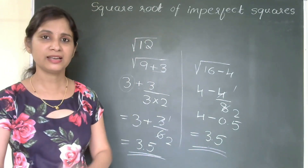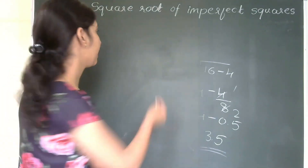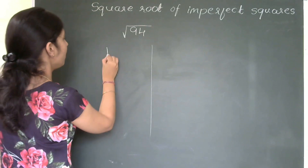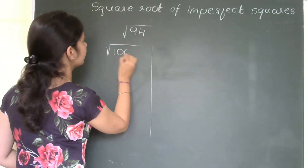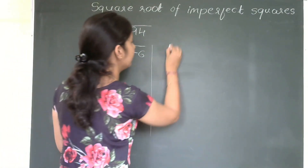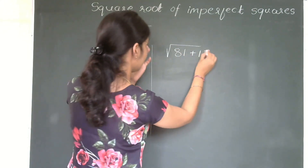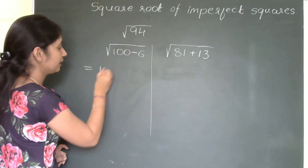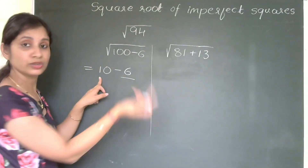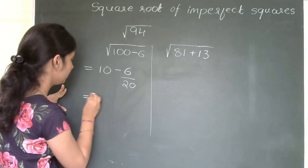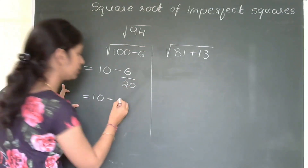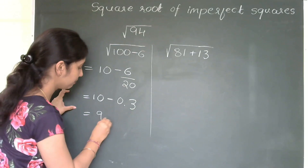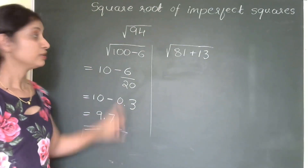Second example: finding the square root of 94. I write 94 as 100 minus 6. Next step: √100 is 10, then minus 6 divided by (2×10) = 6 divided by 20 = 0.3. So 10 minus 0.3 equals 9.7. The square root of 94 is 9.7.